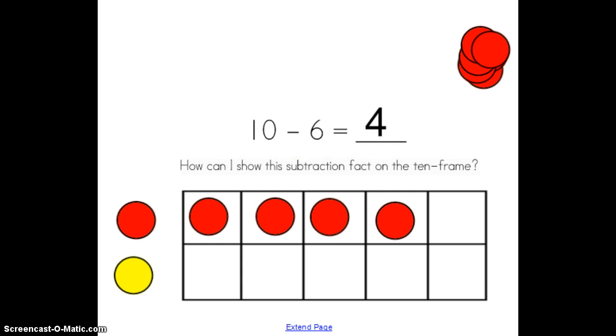This reminds me of when we used a 10 frame to help us in addition. And we knew that when our 10 frame was full that we had 10. So I'm just going to fill in these empty spaces with my yellow counters just to refresh my memory of what it looked like when we used it for addition. When we used a 10 frame for addition, we said 4 red counters plus 6 yellow counters equal 10. Well, if I think about that, those are the same numbers that I have in my subtraction sentence just in a different order because I'm not adding right now. I am subtracting.